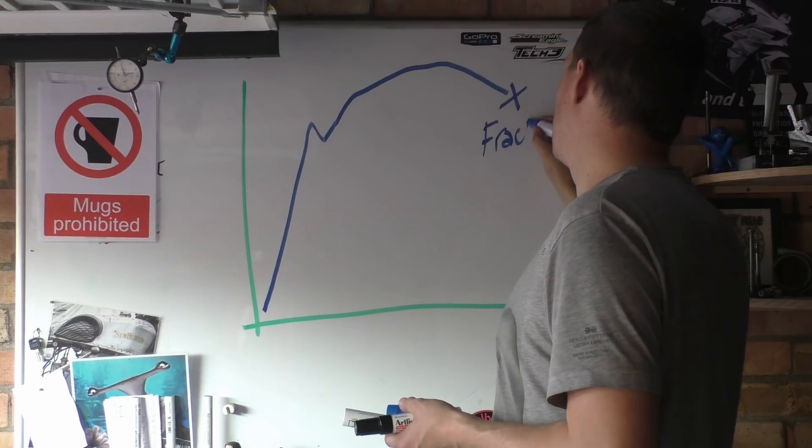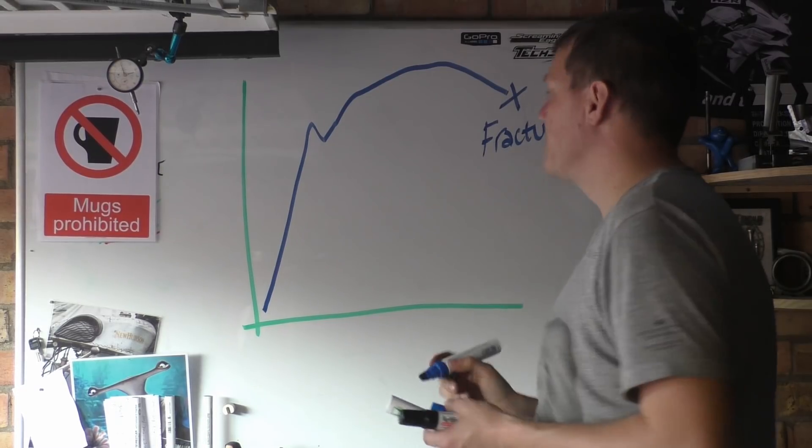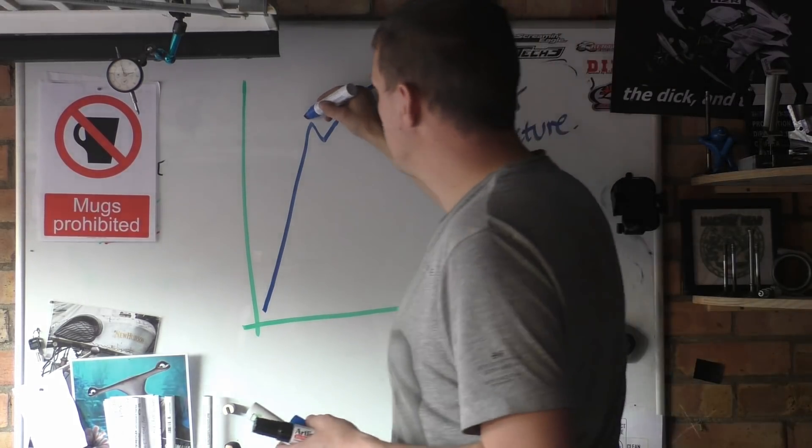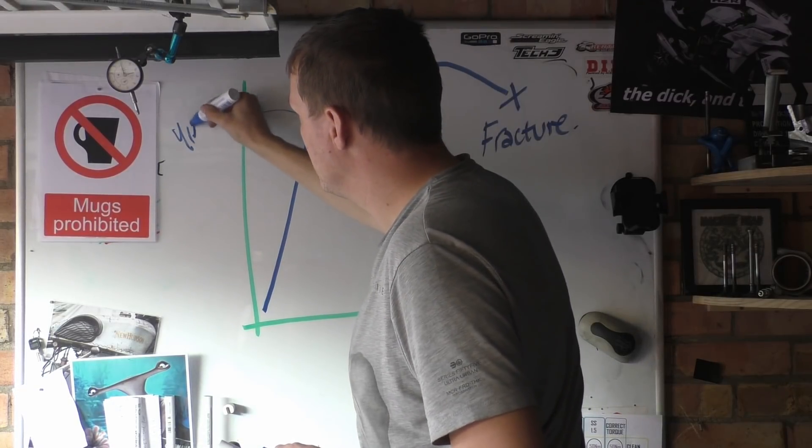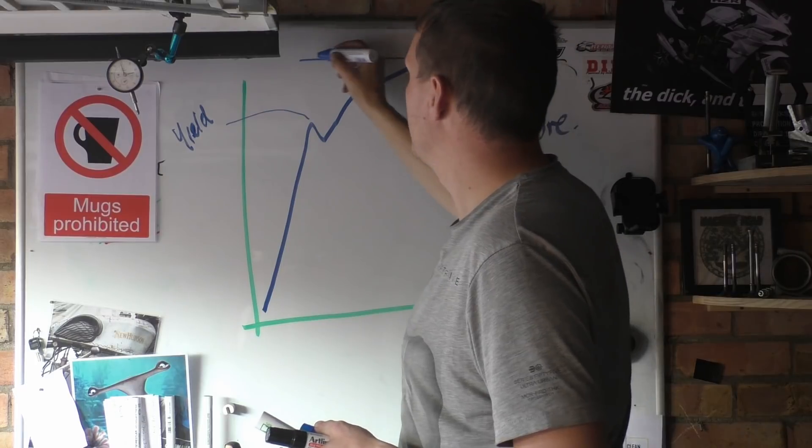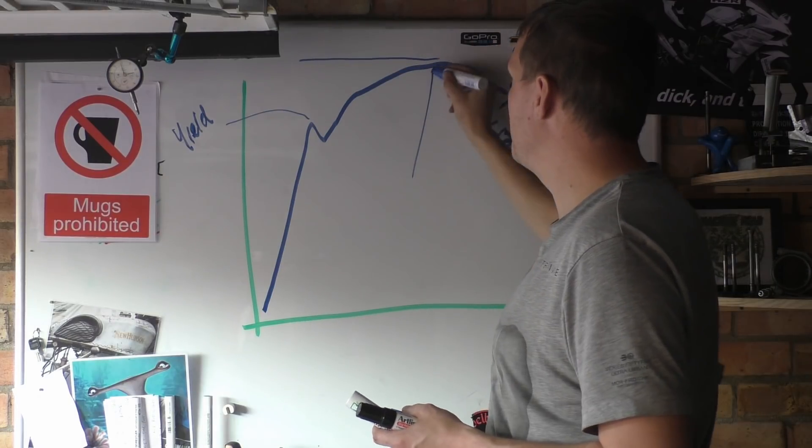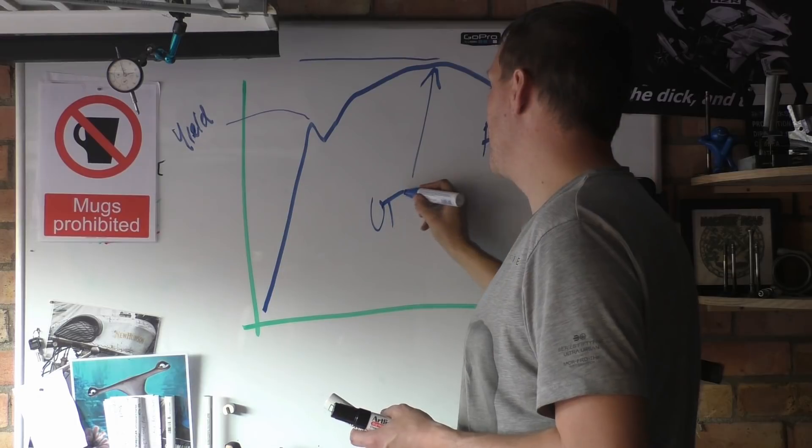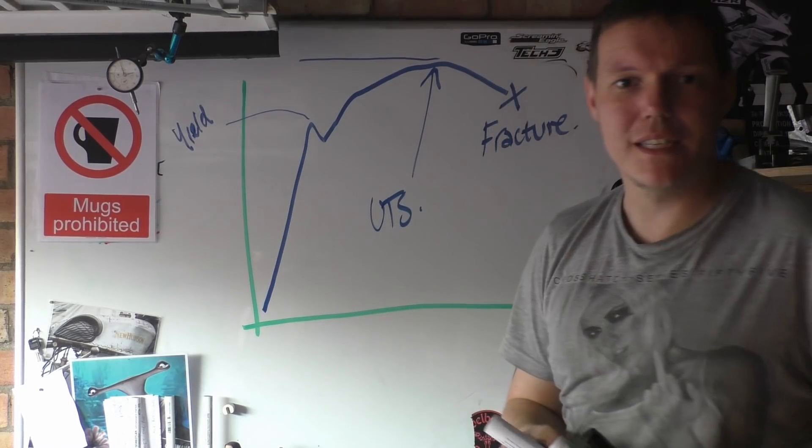So that's fracture, that's ultimate failure. This bit here is your yield, and then right up here, this top peak point here, is your UTS—that's your ultimate tensile strength.